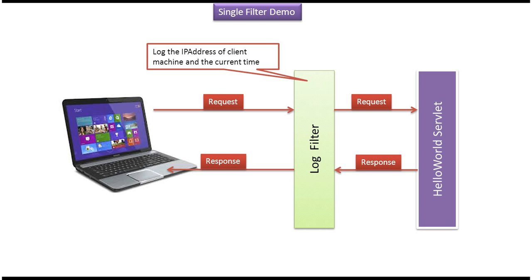In this video tutorial I will cover single filter demo. The client sends a request to the HelloWorld servlet. Before the request goes to the HelloWorld servlet, it goes to the log filter. The log filter will log the IP address of the client machine and the current time. Then it will forward the request to the HelloWorld servlet, which will process it and send a response back to the log filter. Then the log filter will send the response back to the client.